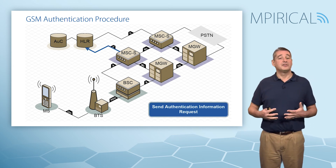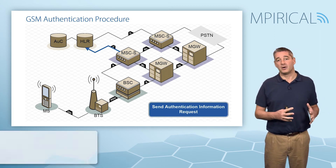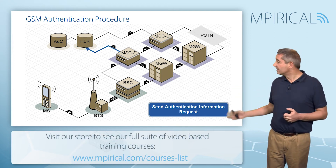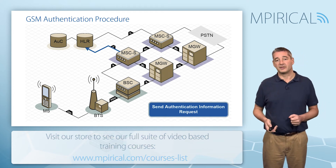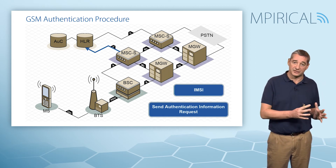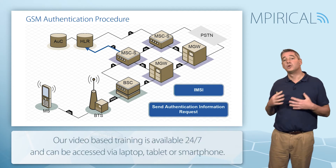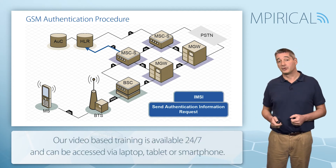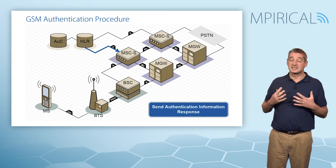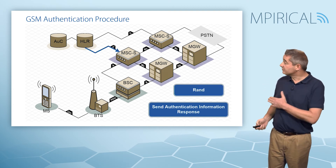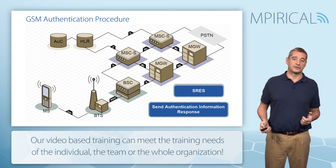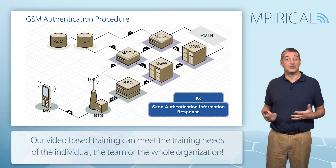To start authenticating our GSM phone, the MSC server — the server to which the mobile is attached — sends a Send Authentication Information Request message. To ensure the correct authentication vector is retrieved for this subscriber, this message contains the IMSI, the International Mobile Subscriber Identity. In response, the HLR returns the Send Authentication Information Response, containing our authentication vectors made up of the random number, SRES the signed response, and Kc the cipher key.